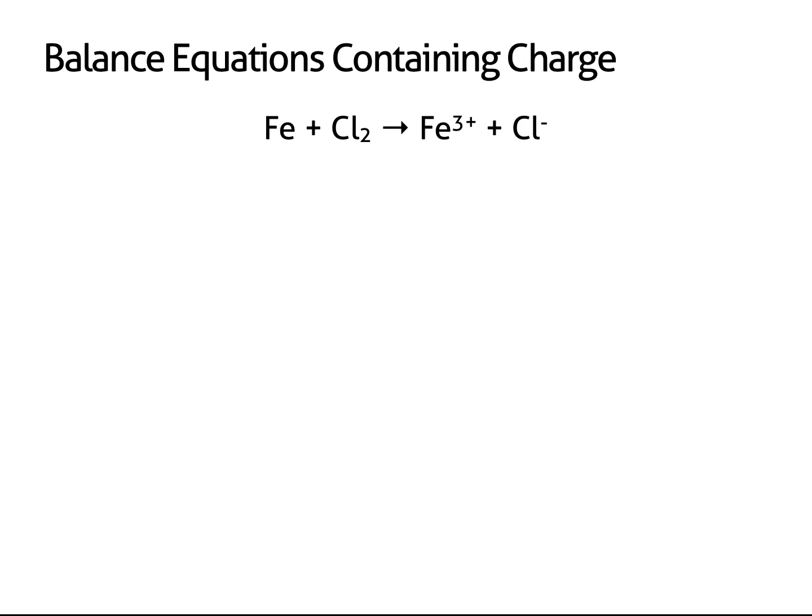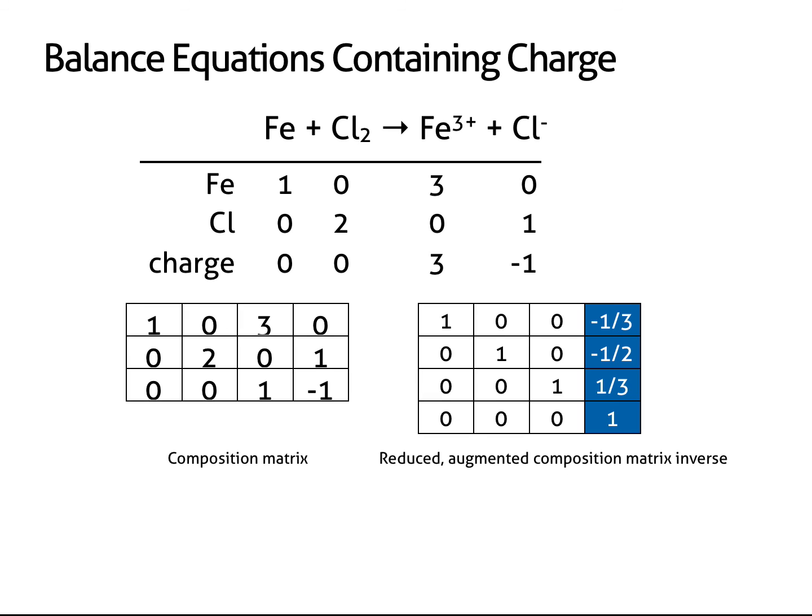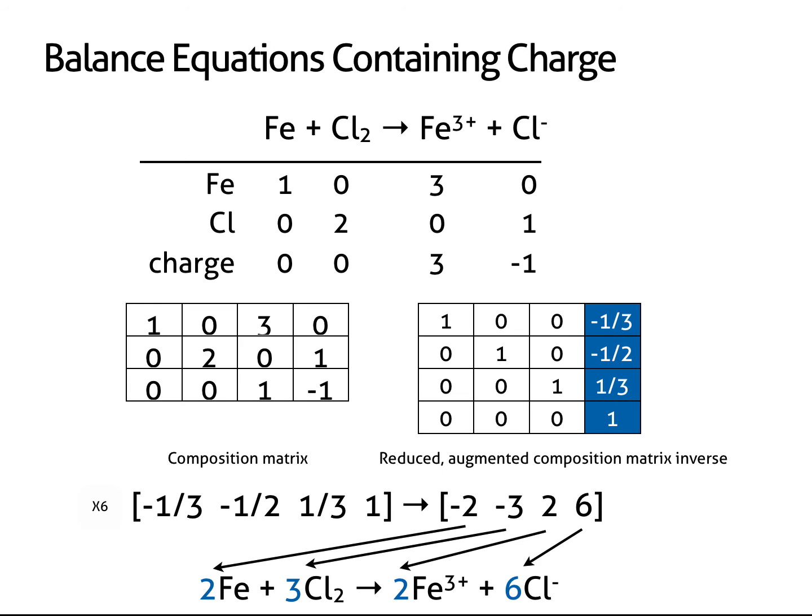This method can also be applied to equations involving charge. In this example, we account for charge in the last row of the composition table. Notice how the numbers added to this row can be either positive or negative, depending on the sign of the charge. Reducing, augmenting, and inverting the composition matrix gives a new matrix, from which coefficients can be pulled. Fractions are eliminated by multiplying through by six.